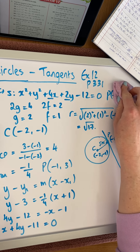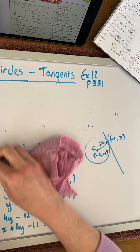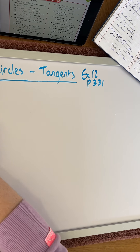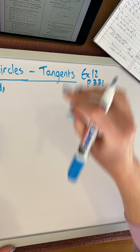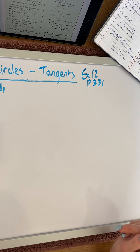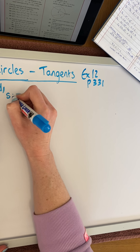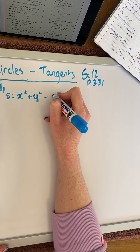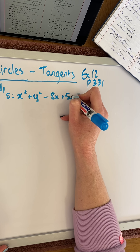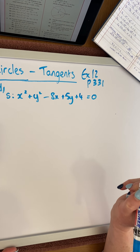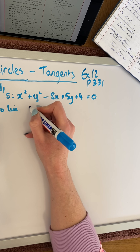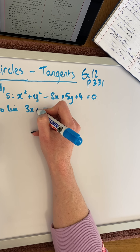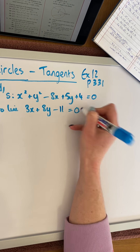That's the first type of question based on tangents to circles. The next type is where we are given the slope of a tangent. We're going to look at question 2, part D. We are asked to find the equations of the tangents — note there are two tangents possible — to the circle x² + y² − 8x + 5y + 4 = 0, where the tangents are perpendicular to the line 3x + 8y − 11 = 0.